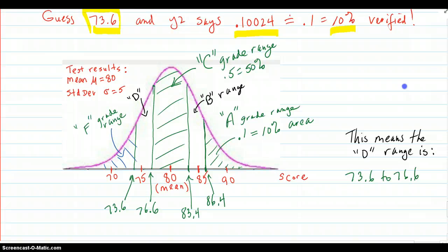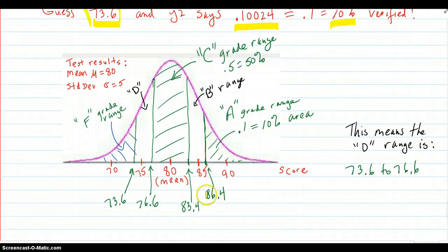Here's your A range of 86.4 and above. That's 10% of the area up there. That's all this. Then, your C range was between 76.6 and 83.4. Meaning that 50% was in here, because the teacher wanted to give the middle 50% AC. So, all this area was 50%. The B range was then forced between.